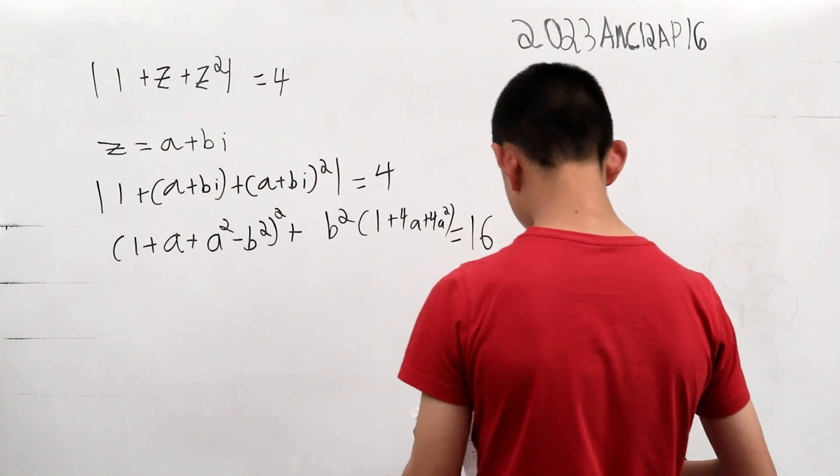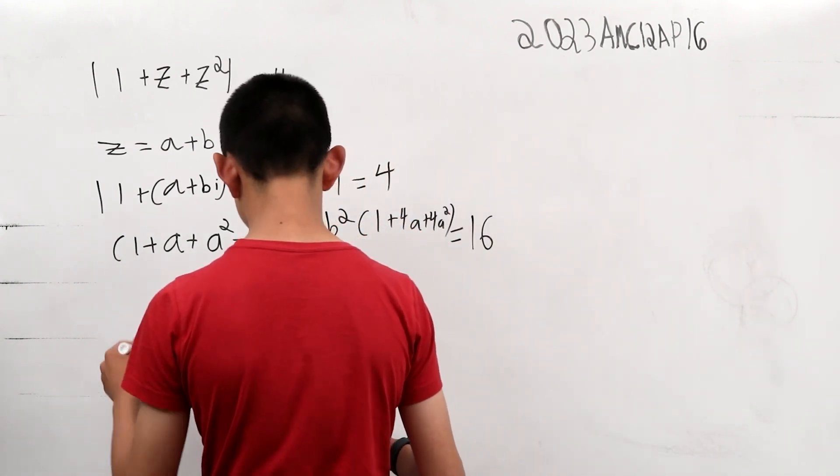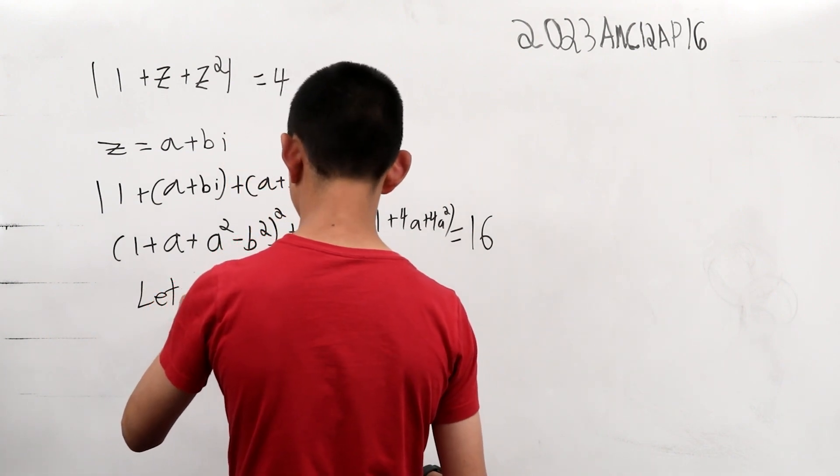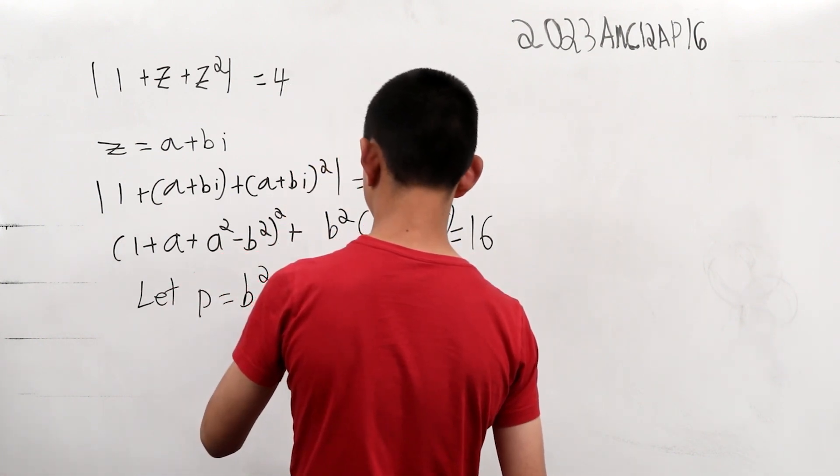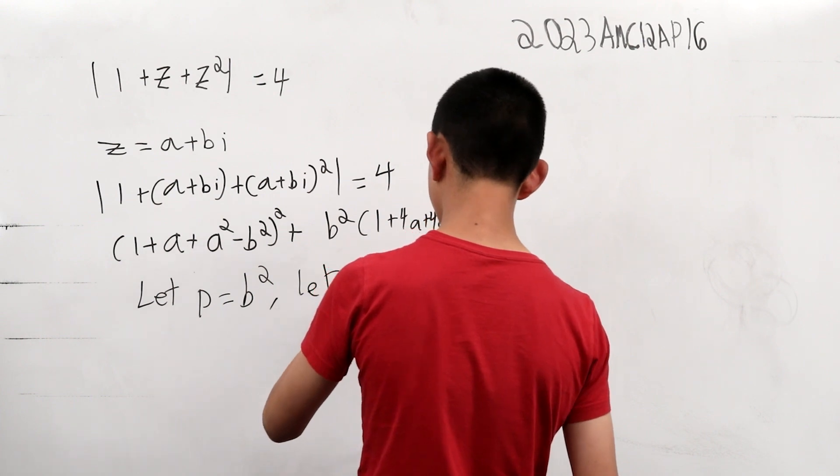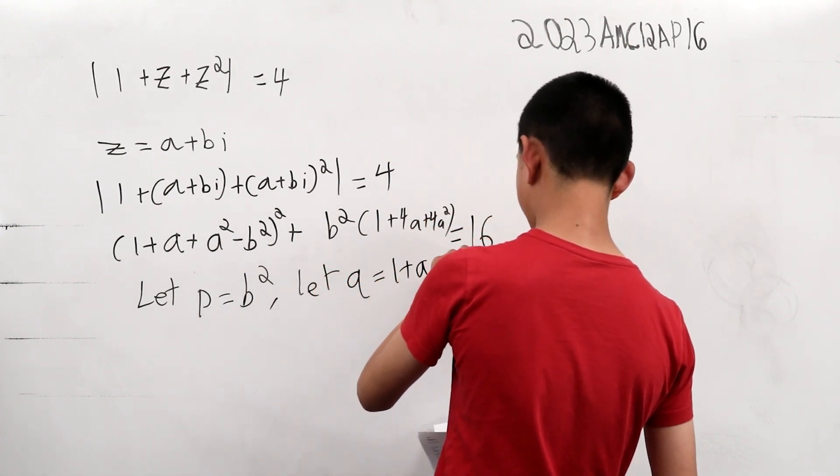So, what do we do now? Well, we have to use a bit of substitution to make things easier. So we let p equals b squared, and we let q equals 1 plus a plus a squared.